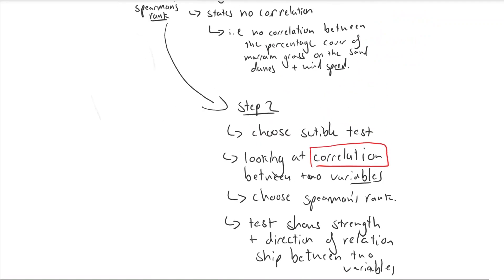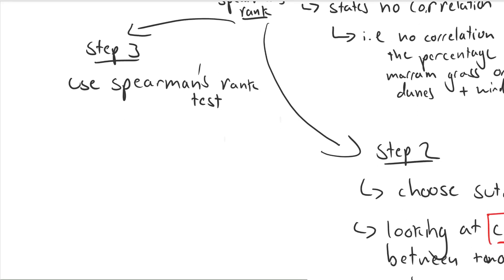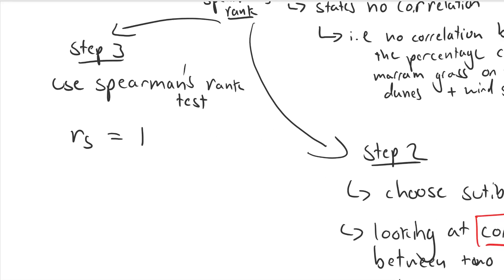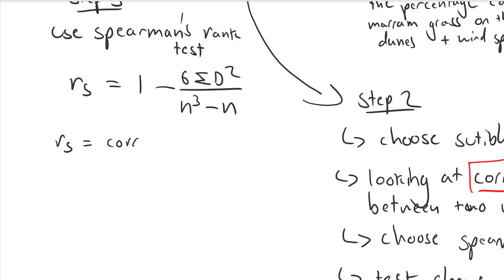Step three is calculating the test statistic or we're going to run the test essentially. We're going to use the coefficient using the formula rs equals one minus six the sum of d squared over n cubed minus n where rs is the coefficient which we're trying to calculate.